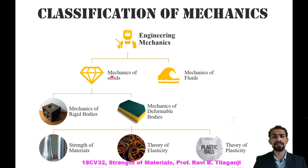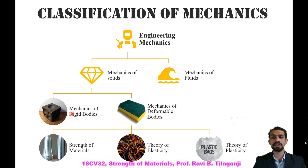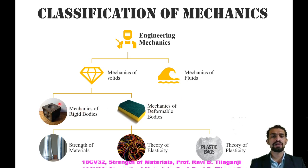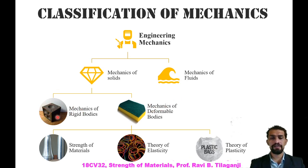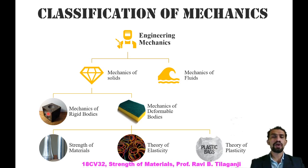Mechanics dealing with solids is bifurcated into two types: mechanics of rigid bodies and mechanics of deformable bodies. Mechanics of rigid bodies deals with forces acting on bodies that have no deformation — these non-deformable bodies are what you have already studied in first year engineering mechanics.